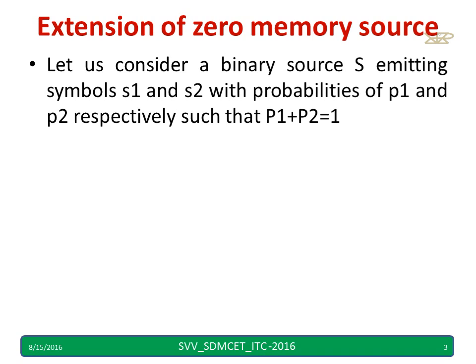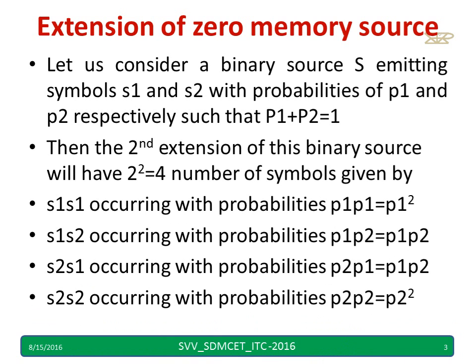Let us consider a binary source that is emitting symbols S1 and S2 with probabilities p1 and p2, where the sum of probabilities equals one. The second extension of this binary source will have two-raised-to-two, that is four, number of symbols. The second extension gives two raised to two; the third gives two raised to three, and so on.